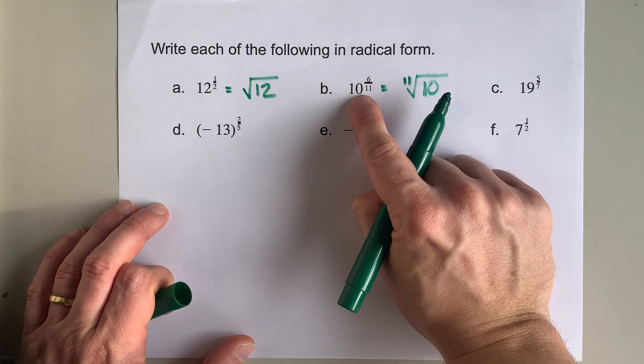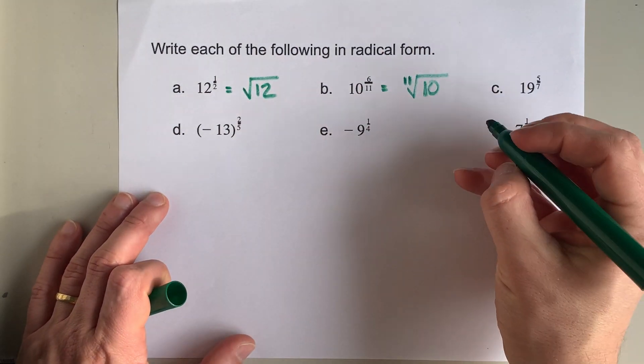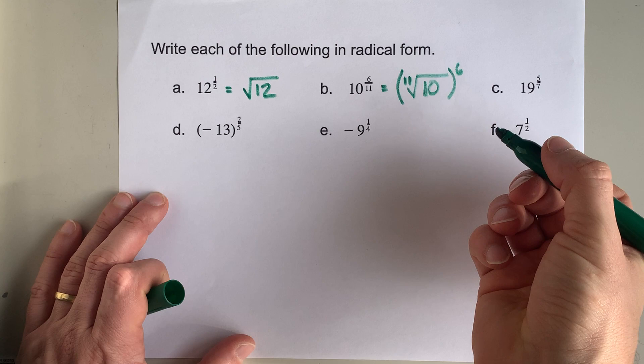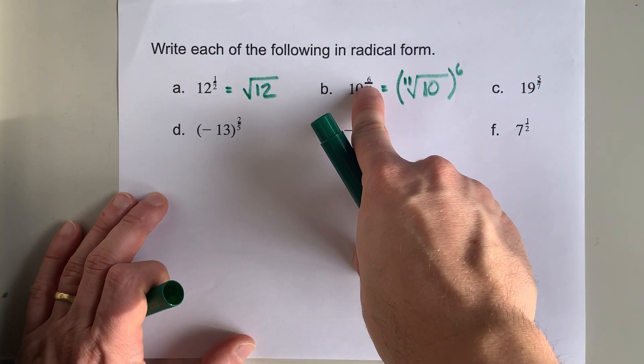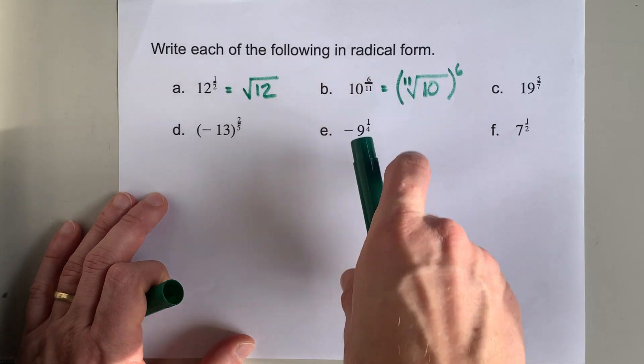So this is 10 and taking the 11th root of it and then taking that answer and raising it to the power of 6. So the numerator of a fractional exponent goes out here. The denominator is the type of root you are taking.